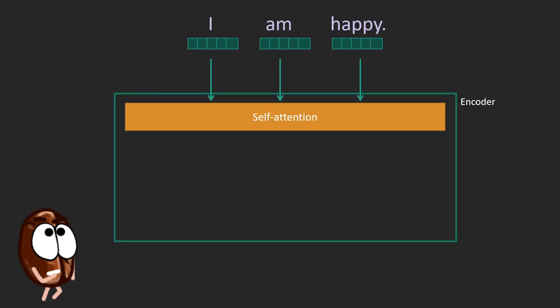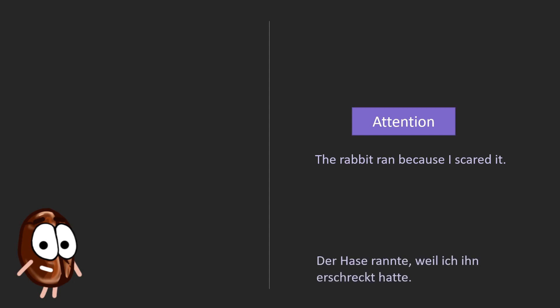Self-attention is very similar to attention, which we remember computes an importance score for each word vector. So in attention, if we want to translate this sentence, attention computes importance between two different sequences and tells us that for translating rabbit to haze, we might want to focus on both rabbit and it, because they both refer to the same entity.